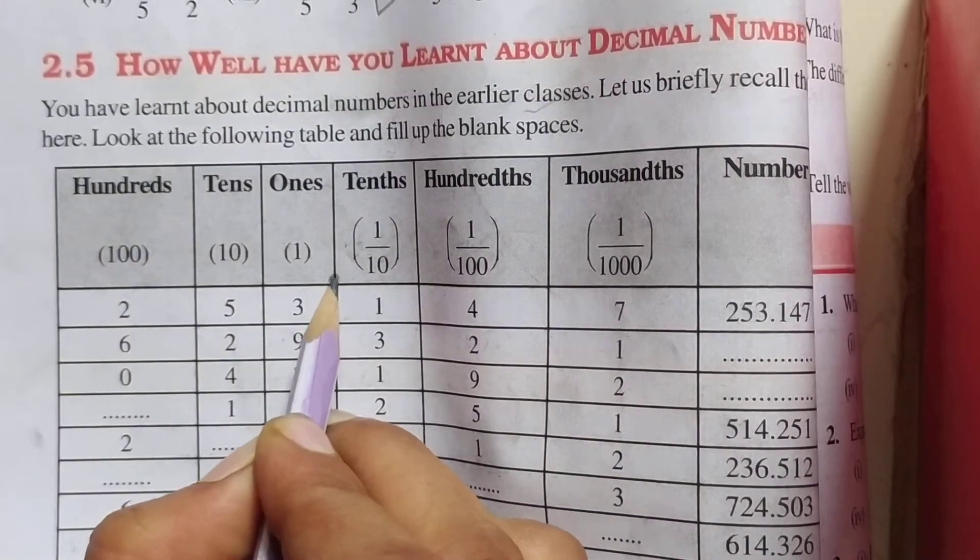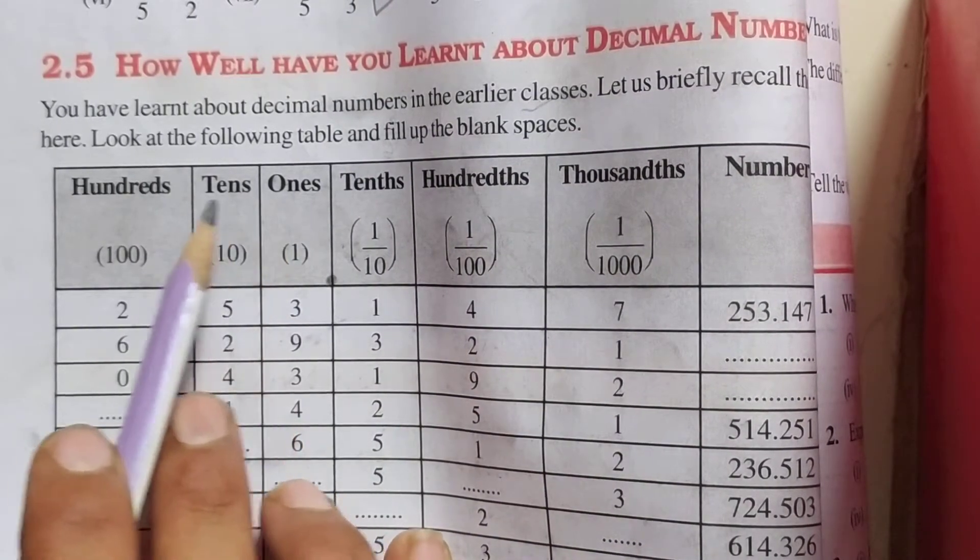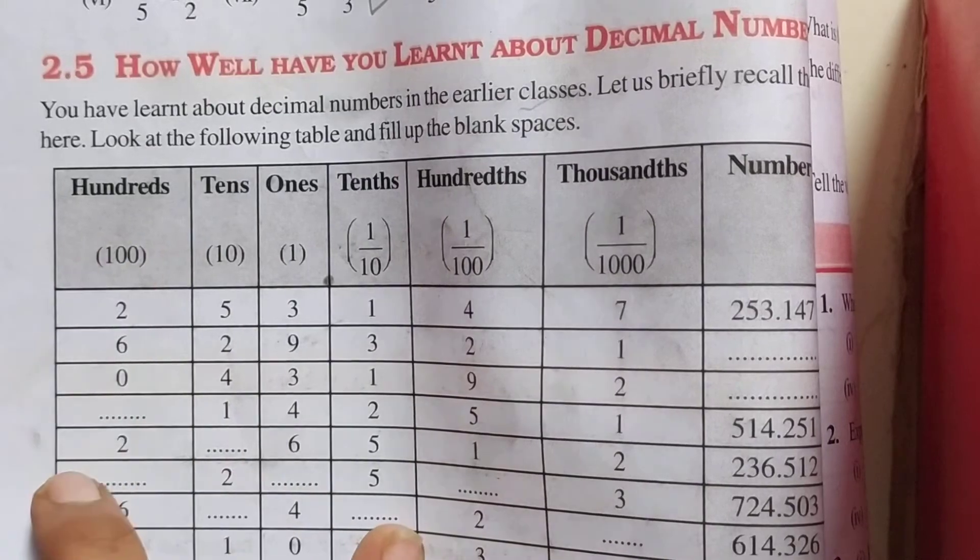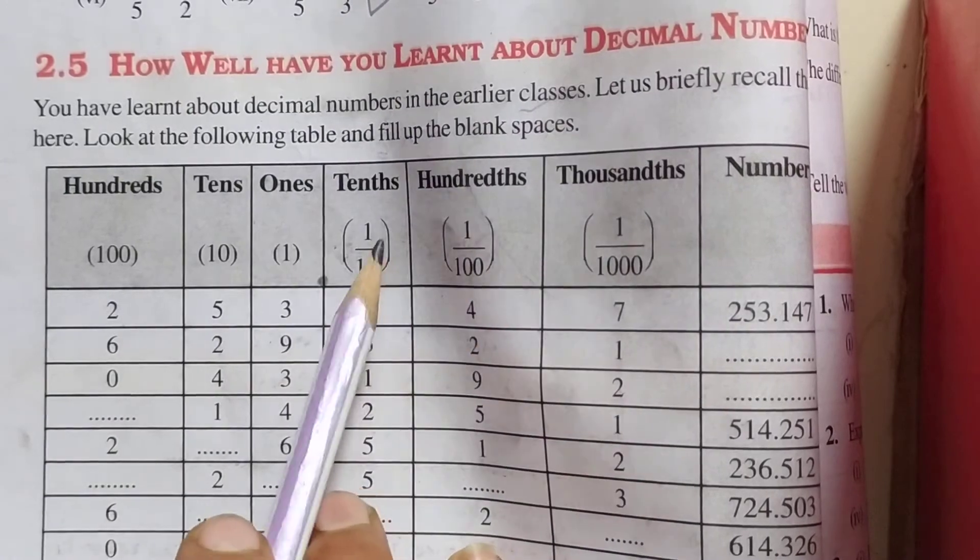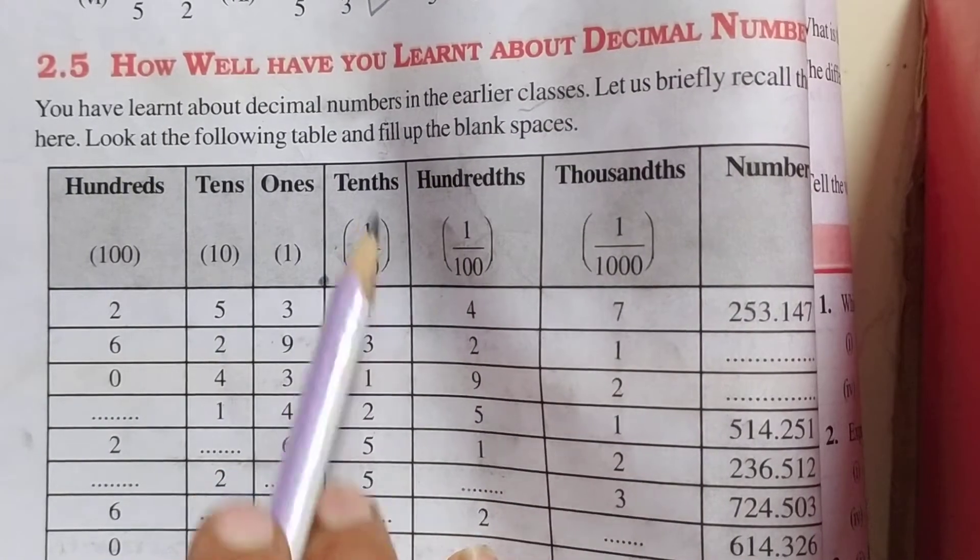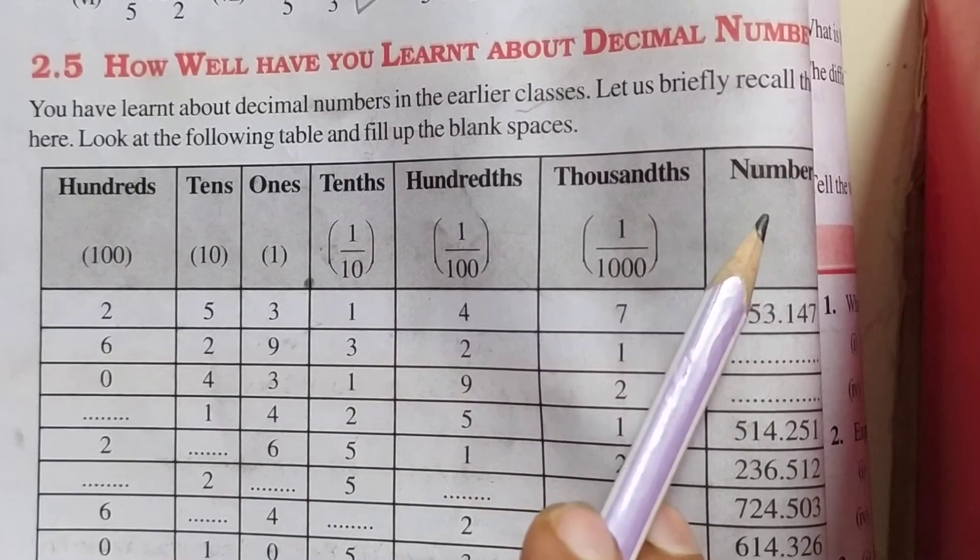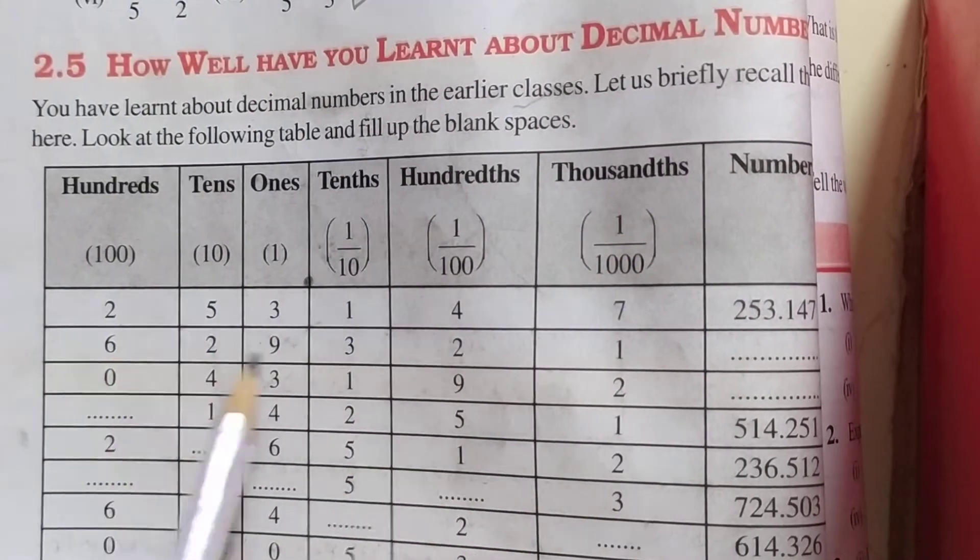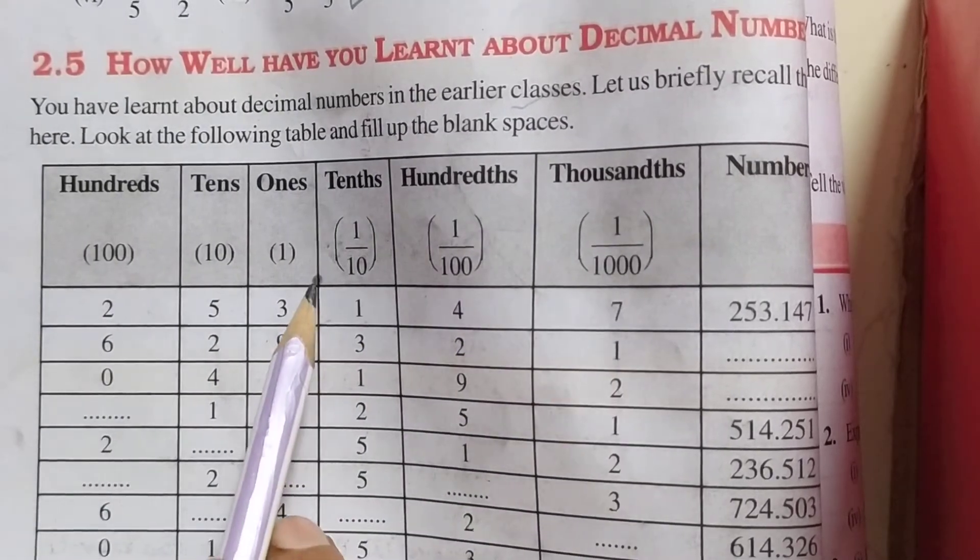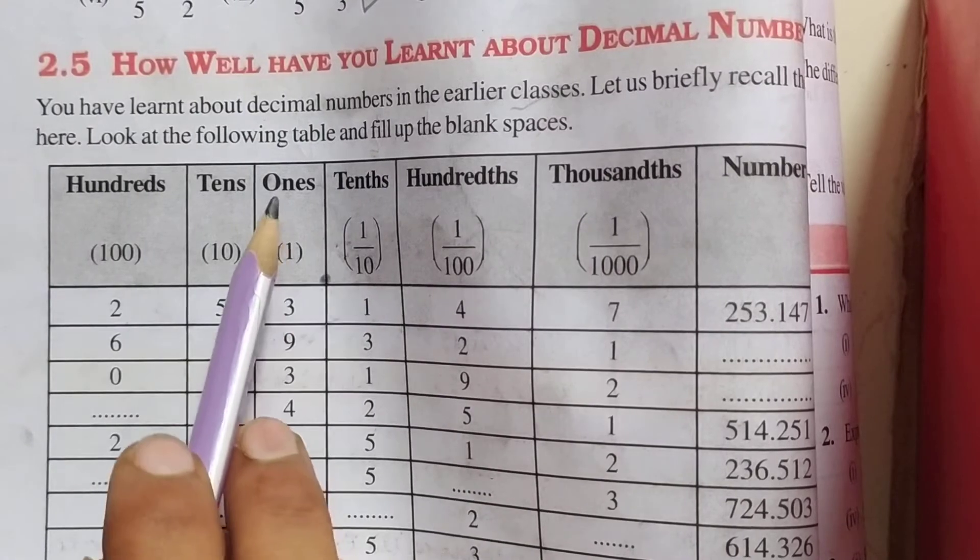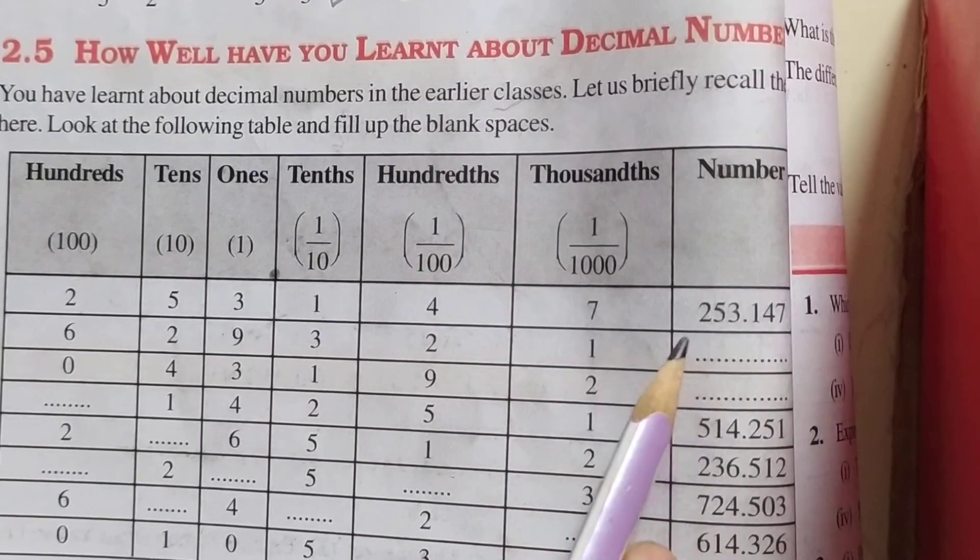Here will come point. Before point, the place values are ones, tens, hundreds and so on. And after point, it means right side, the place values come tenths, hundredths, thousands and so on. So now, look at here. Here is 2, 5, 3, 1, 4 and 7. Now students, point is here, between ones and tenths place value. So the answer will be like that.